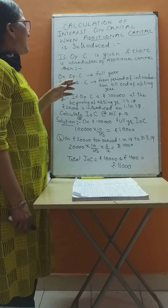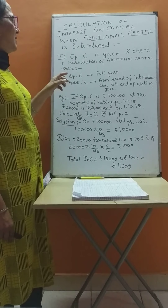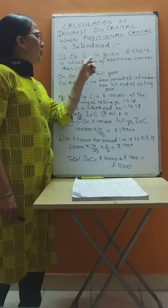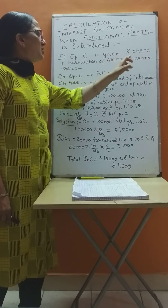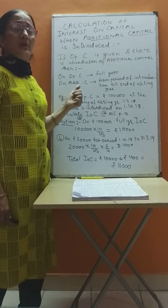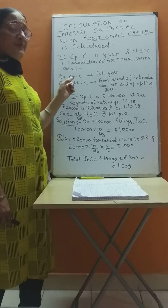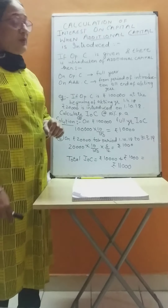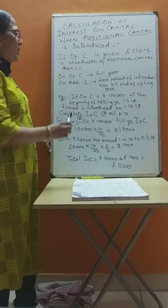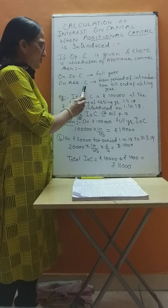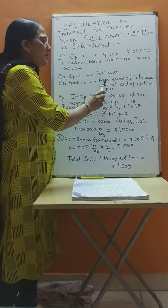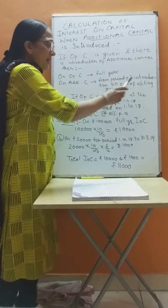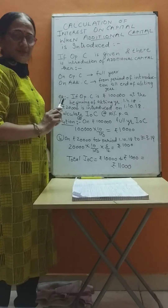Today's topic is the calculation of interest on capital when additional capital is introduced in the business. Suppose opening capital is given and there is an introduction of additional capital — how will the interest on capital be calculated? On opening capital, interest on capital will be calculated for the full year. On additional capital, interest will be calculated from the period of introduction till the end of the accounting year.